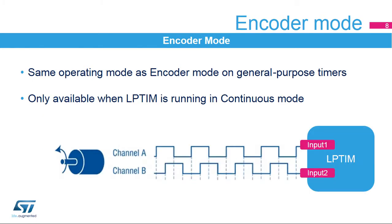The low-power timer features an encoder mode function that can interface with incremental quadrature encoder sensors using the peripheral's INPUT-1 and INPUT-2 inputs. Both inputs feature glitch-filtering circuitry. The encoder function is similar to the one embedded in the general-purpose timers. To use the encoder mode function, the low-power timer must be running in continuous mode. Only low-power timers 1 and 2 embed the encoder mode function.